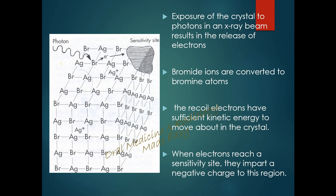What happens when a photon reaches the film? After exiting an object, the x-ray photon reaches the film. Exposure of the crystal to the photons in an x-ray beam results in the release of electrons. The photon releases one electron from the bromide ion, converting the bromide ion into a bromine atom. The released electron has sufficient kinetic energy to move about in the crystal and finally reaches the sensitivity site, imparting a negative charge to it.